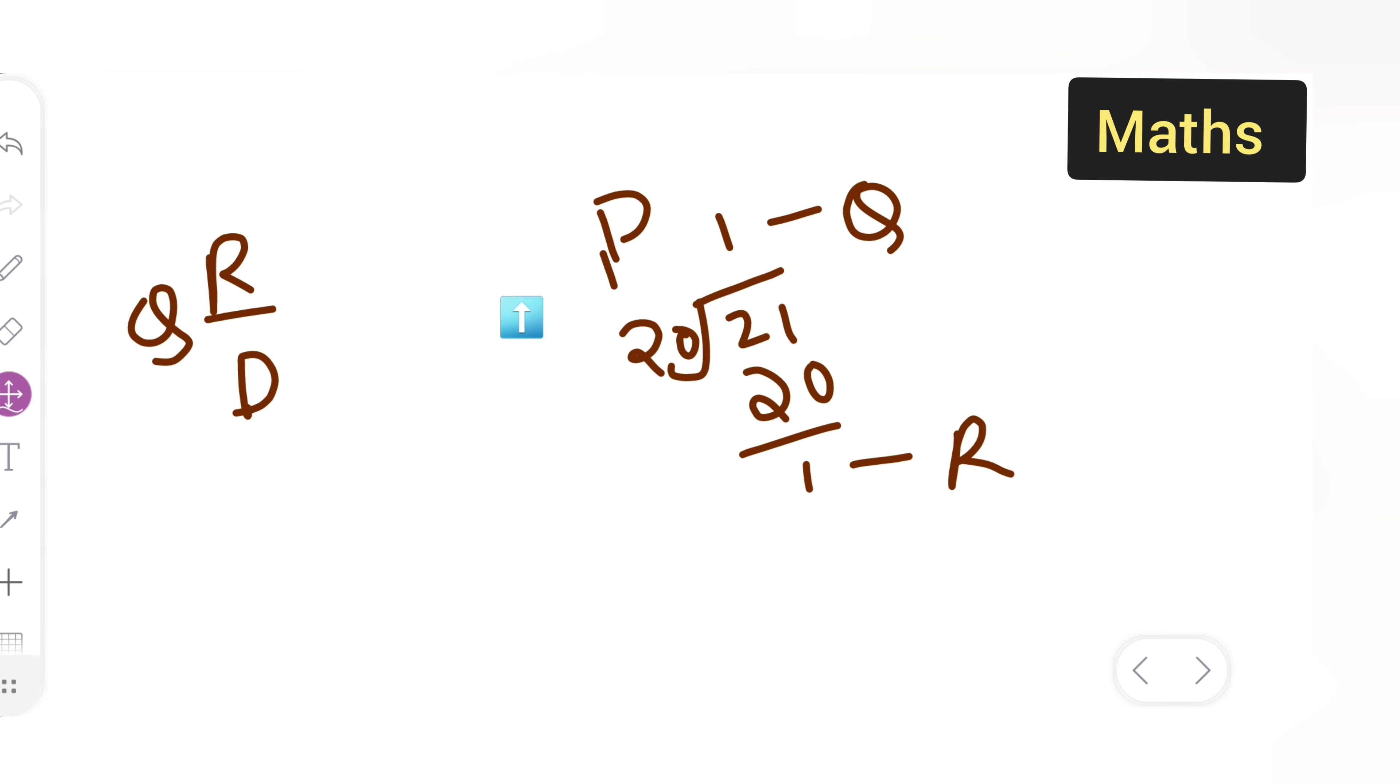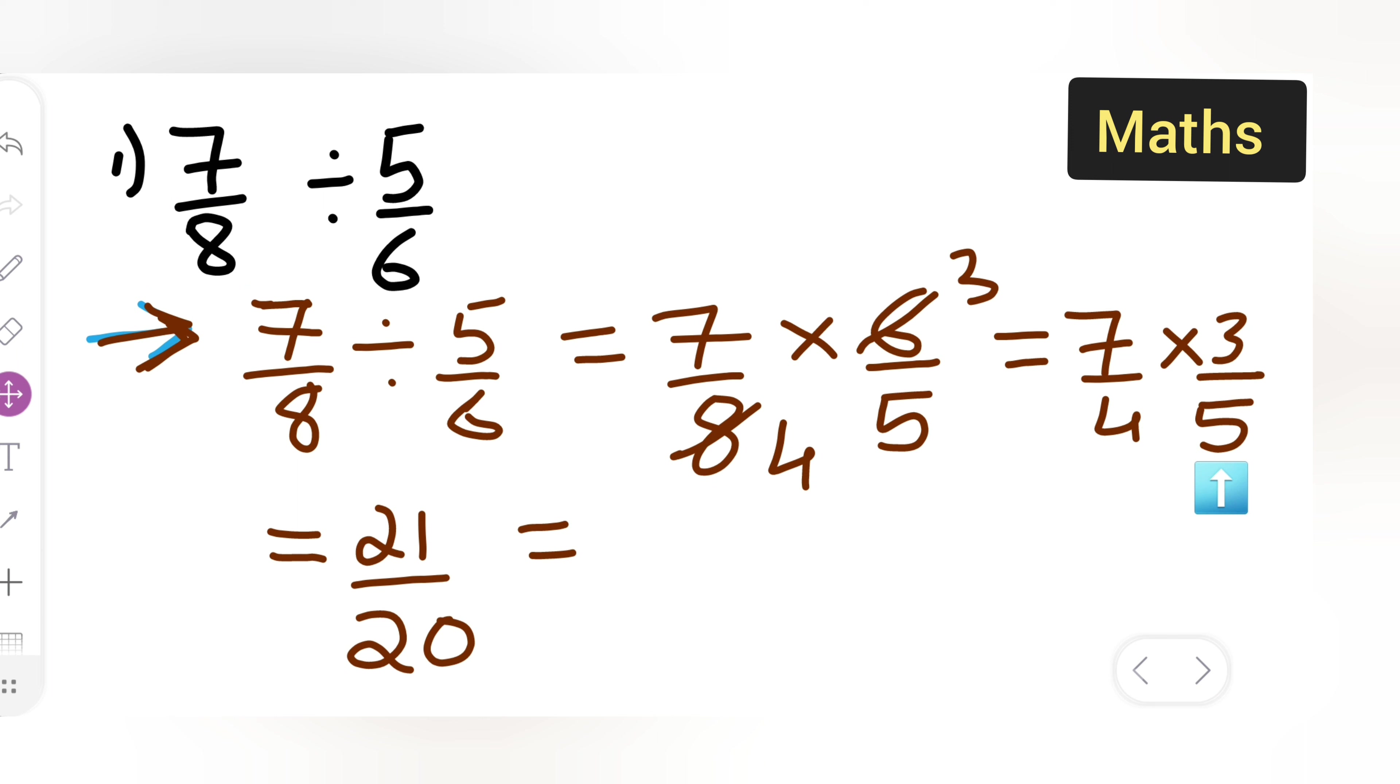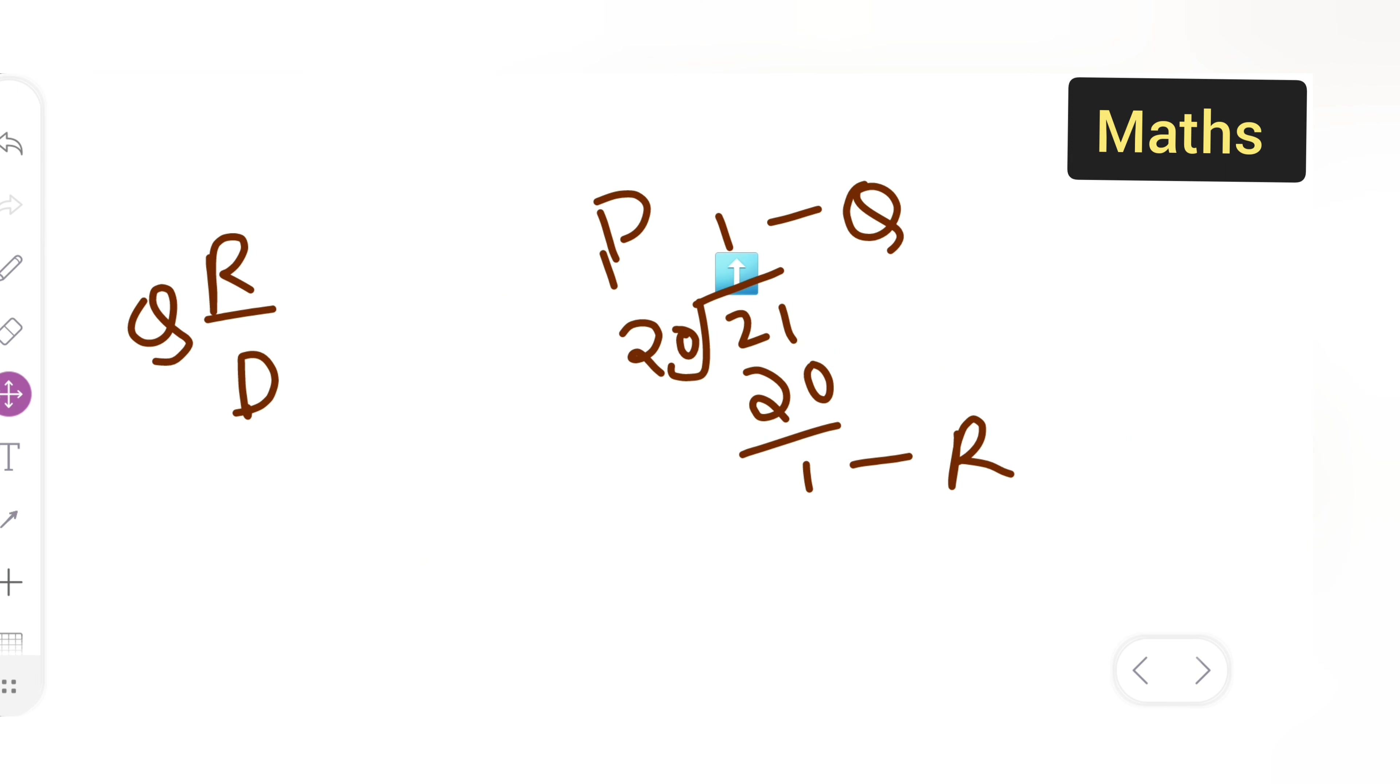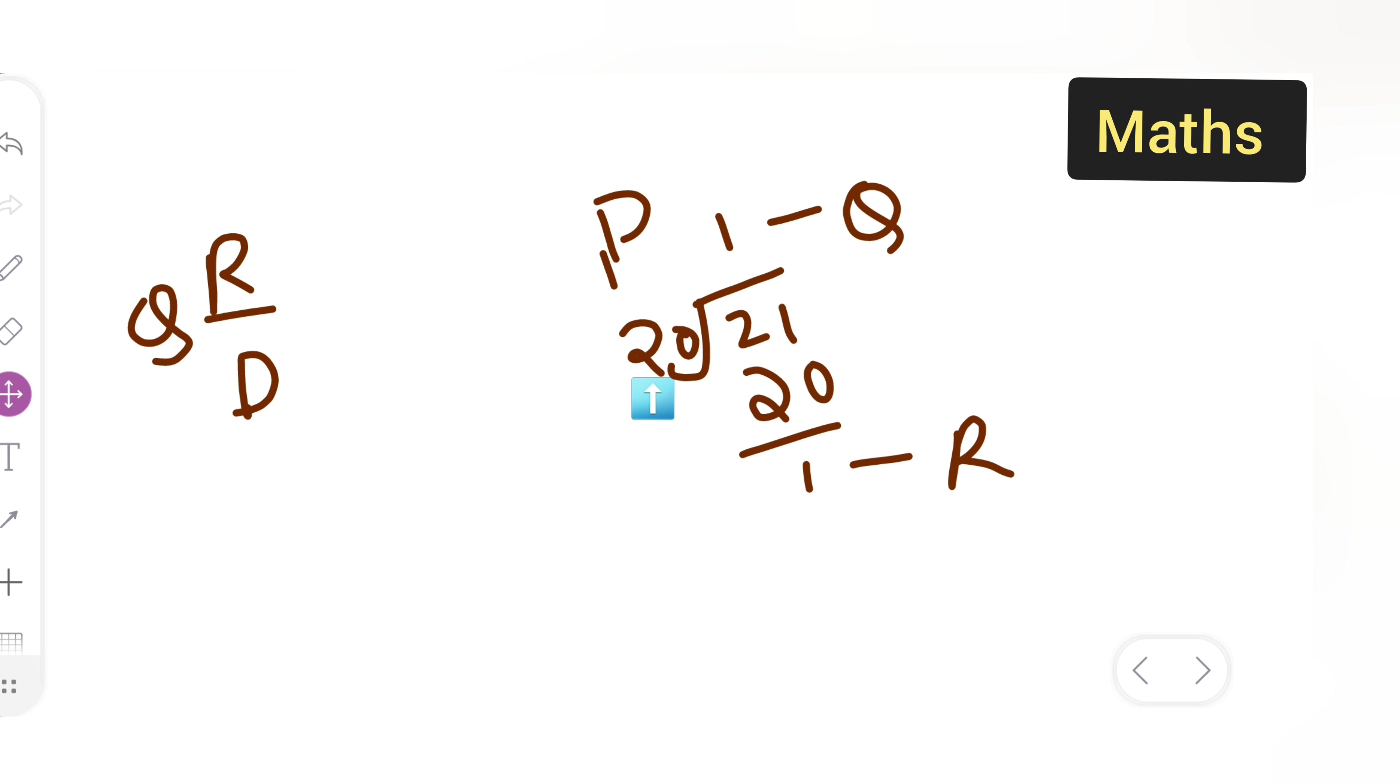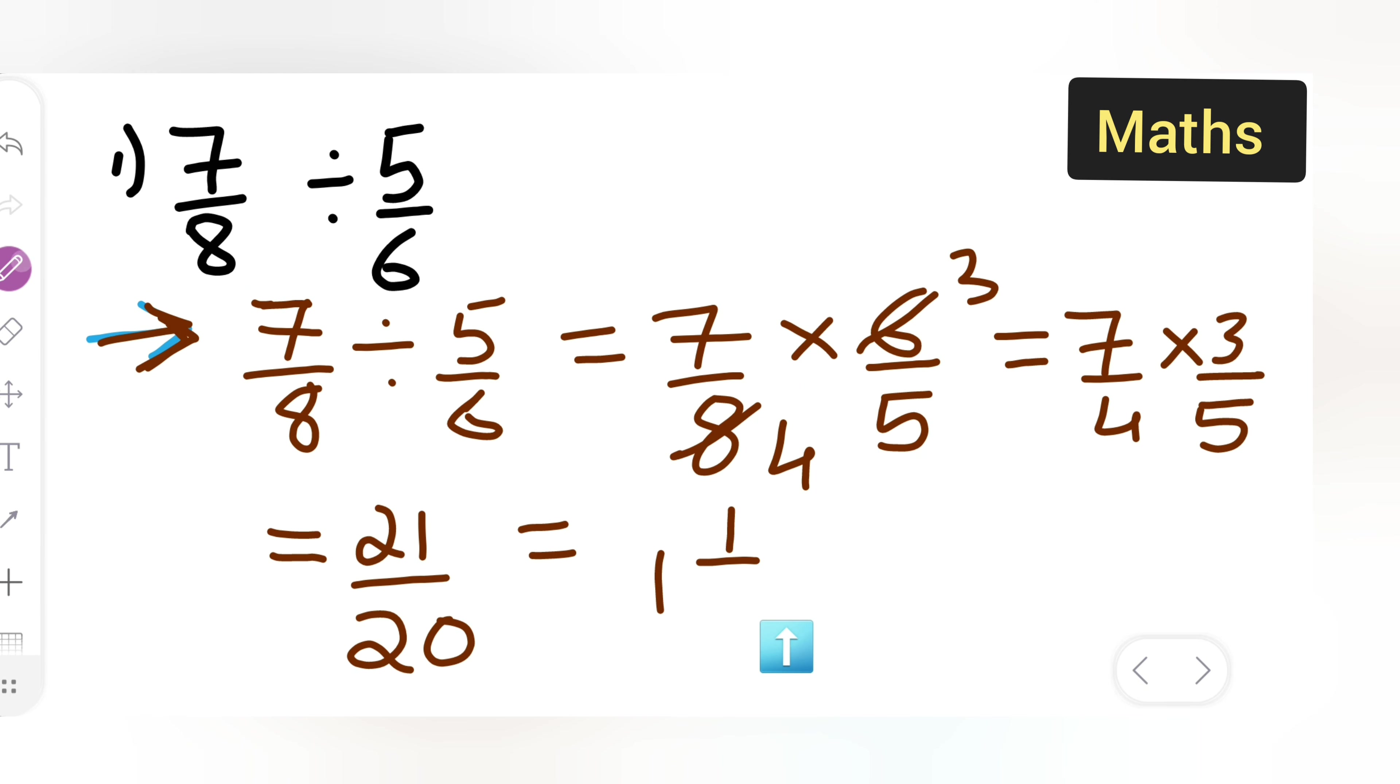So basically your quotient will be 1. I will be writing here 1, the remainder is 1, that's why I have written 1, and upon, I will be writing your dividend that is 20. So it will be 20.